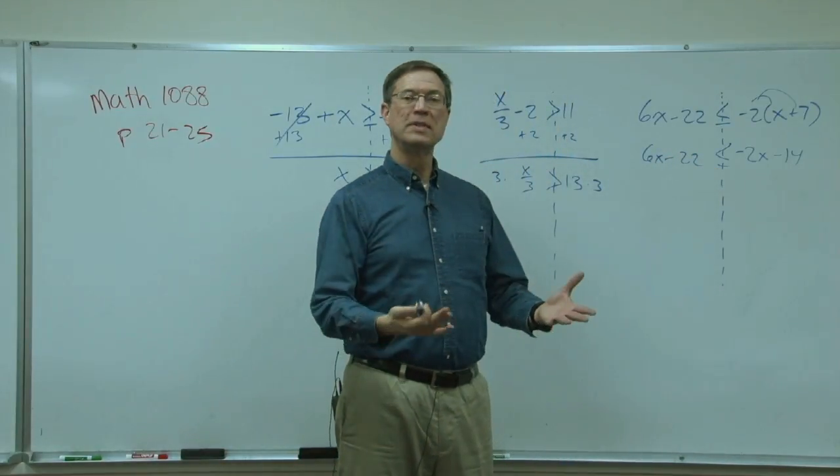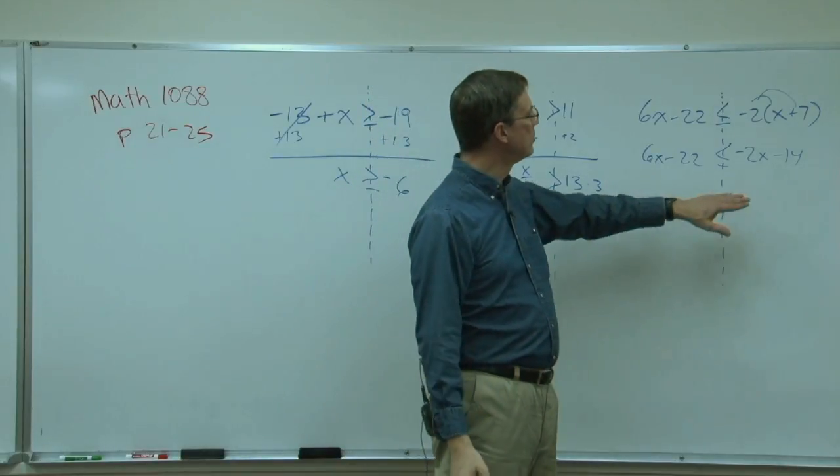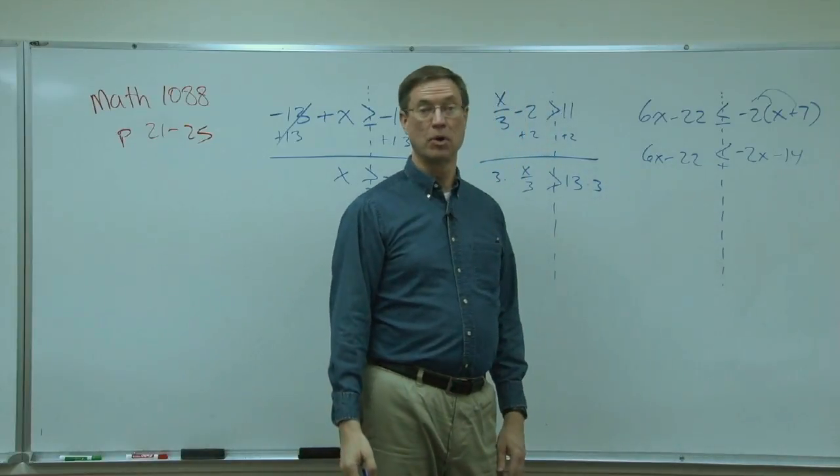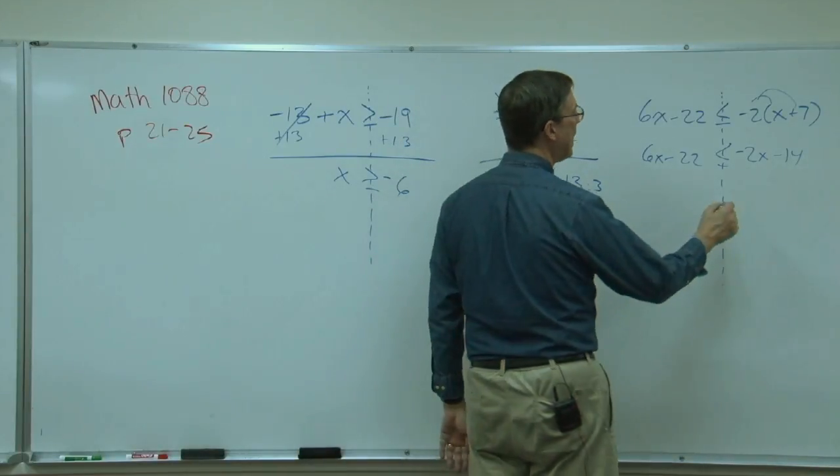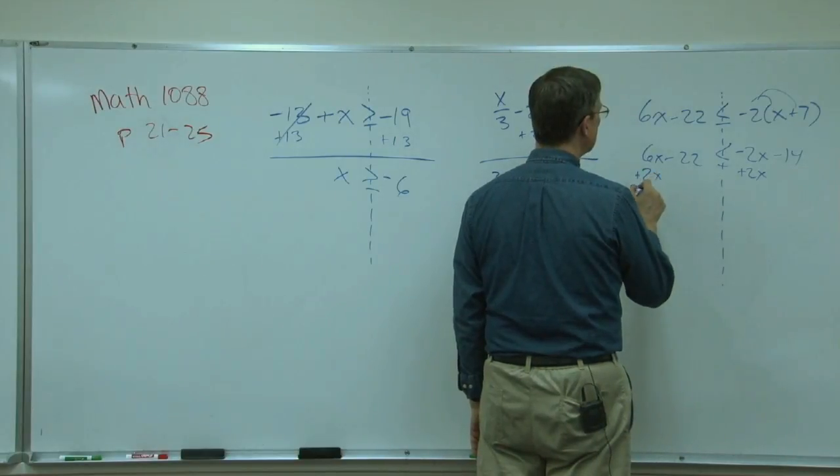Now my goal is always to keep the x on the left, so what I like to do first is get rid of the negative 2x. Alright, so we're going to do that by adding 2x, and so we add 2x over here. So that cancels.